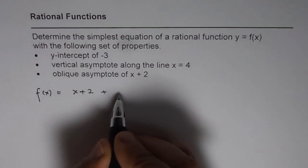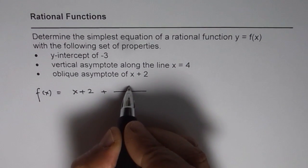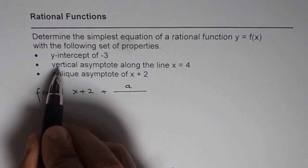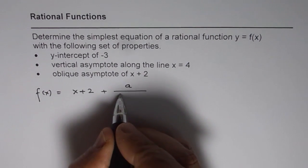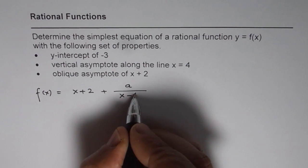Plus the rational function a over... vertical asymptote is along x = 4, that means denominator should be x - 4.